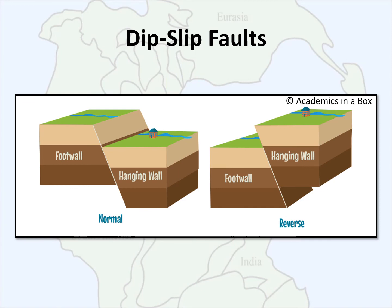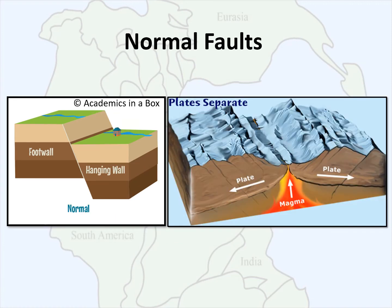Dip slip faults include normal and reverse faults. Their movement is dependent on the dip or slope of the landscape, with rock movement where the hanging wall will move up or down relative to the fault plane. Normal faults are due to tensional forces in the crust — the hanging wall moves down relative to the foot wall. These tensional faults extend the landscape and in some cases are associated with ridge formation and divergent boundaries.